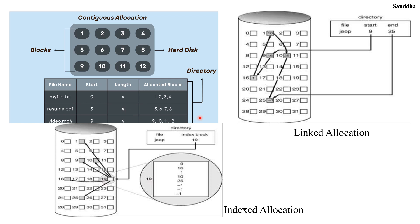Next is linked allocation. In this method, each file is a linked list of disk blocks. The allocated disk blocks are scattered anywhere on the disk. For example, there is a file named G whose starting disk block number is 9, which is linked to the next disk block 16, and 16 is linked back to disk block 1, and so on. The last disk block of the file shown in the directory is 25.